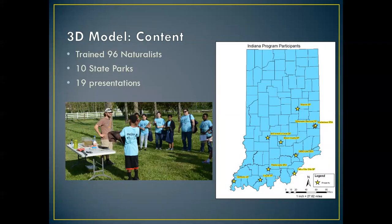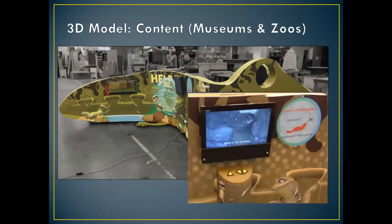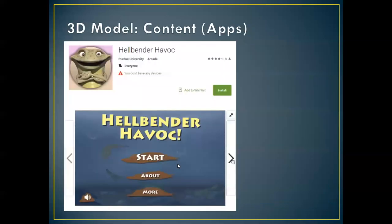Within the last two or three years we started partnering with Indiana State Parks. These 12 or 14 state parks in the southern half of the state are now delivering Hellbender programs to patrons that visit each of those state parks. Now there are thousands of people in the state of Indiana learning about Hellbenders that probably hadn't heard about them before. We've also built museum exhibits and zoo exhibits — including about a 30-foot-long Hellbender at the Indiana State Fair with an interactive game that helps people learn about the importance of Hellbenders in the ecosystem.